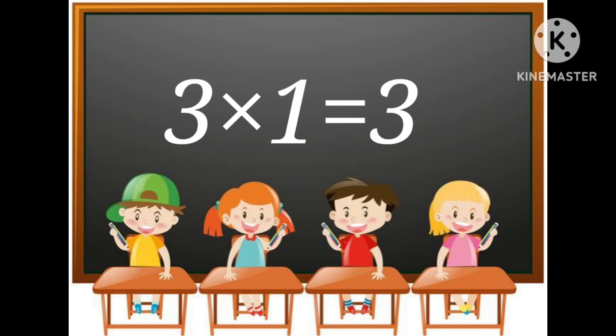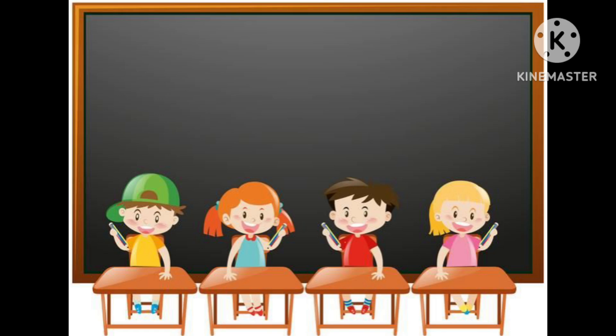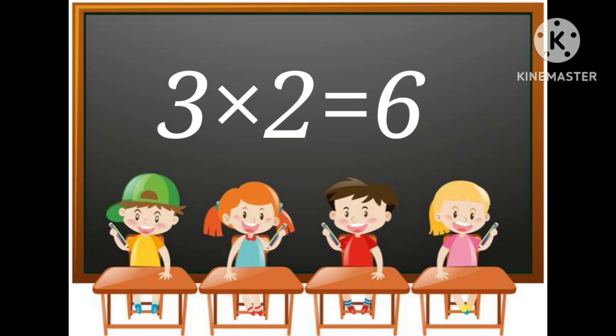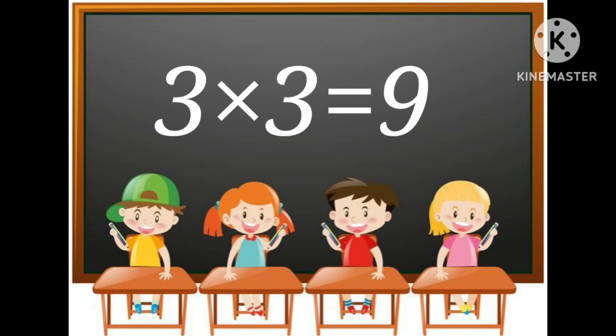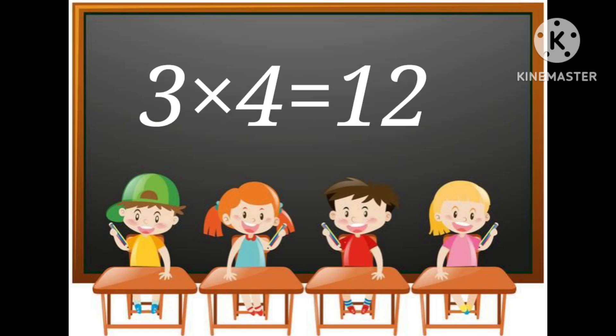3 multiplied by 1 is equal to 3. 3 multiplied by 2 is equal to 6. 3 multiplied by 3 is equal to 9. 3 multiplied by 4 is equal to 12.